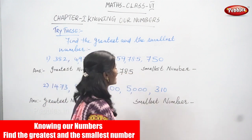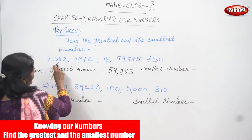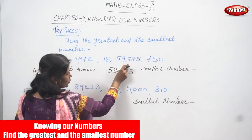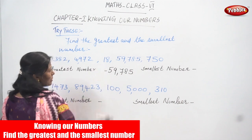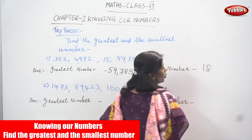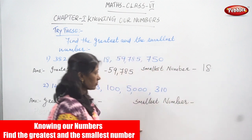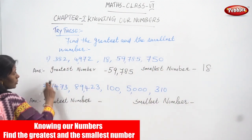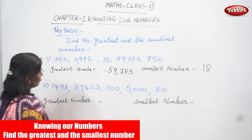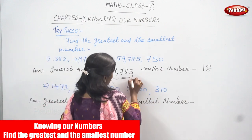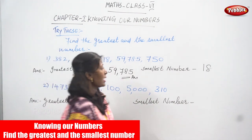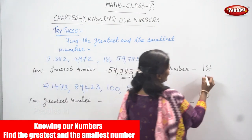Next is the smallest number. Look at this: 3 digit, 4 digit, 2 digit, and 5 digit, again 3 digit. So, the 2-digit number is the smallest number. The answer is 18 — this is 2 digits, so this is the smallest number. So, for the first question: greatest number is 59,785 and smallest number is 18.